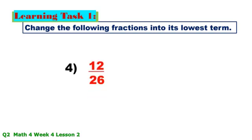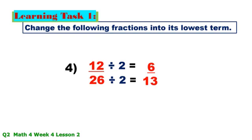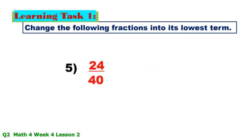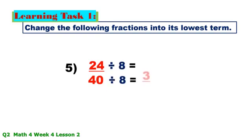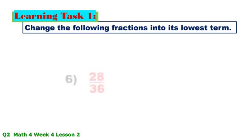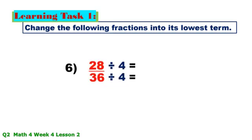Number 4: 12/26 — GCF is 2; 12 ÷ 2 = 6, 26 ÷ 2 = 13. Number 5: 24/40 — GCF is 8; 24 ÷ 8 = 3, 40 ÷ 8 = 5, answer is 3/5. Number 6: 28/36 — GCF is 4; 28 ÷ 4 = 7, 36 ÷ 4 = 9.